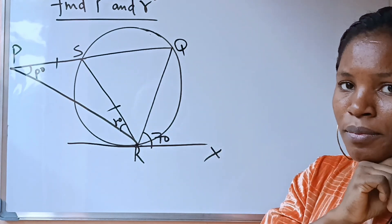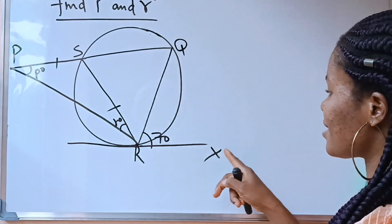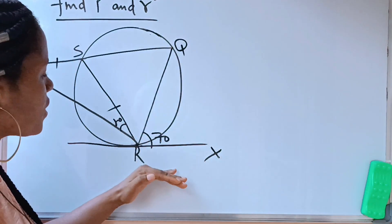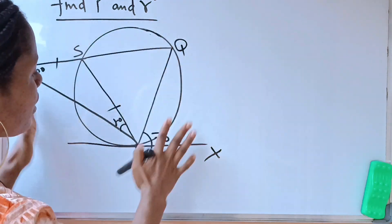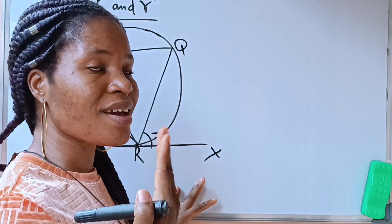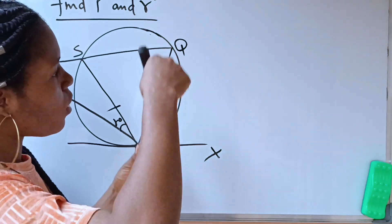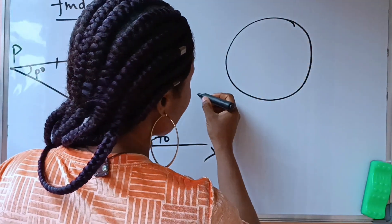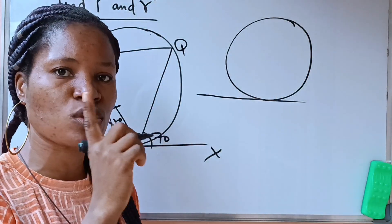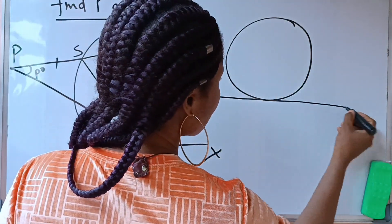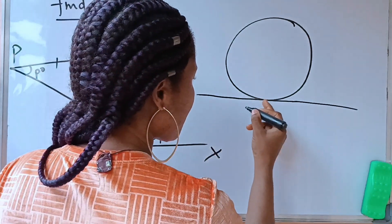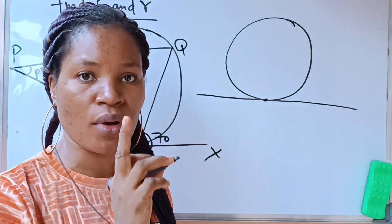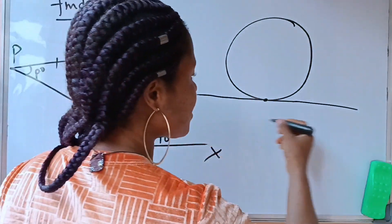This particular line is a tangent and this particular line is also a tangent. Let us first treat the theorem this diagram is examining us on. A tangent is a line drawn that touches the circle at just one point. That particular line touching the circle at just one point is called a tangent.